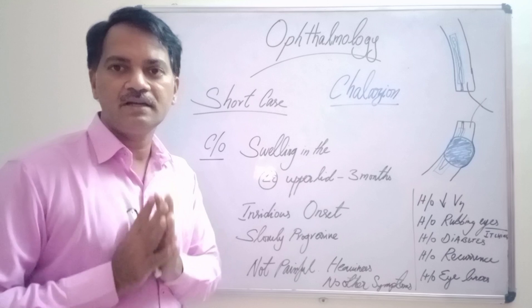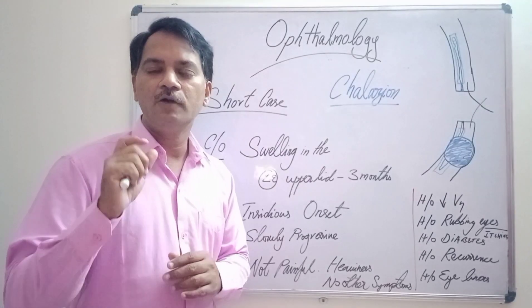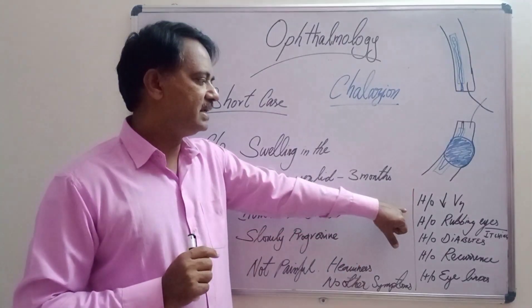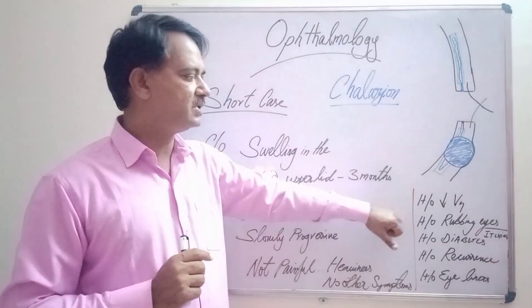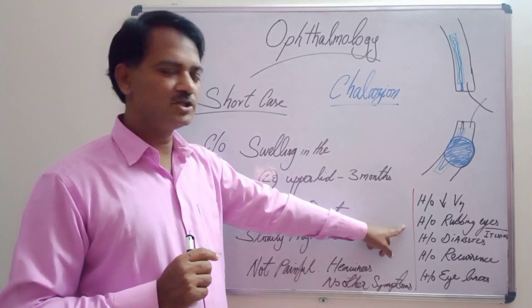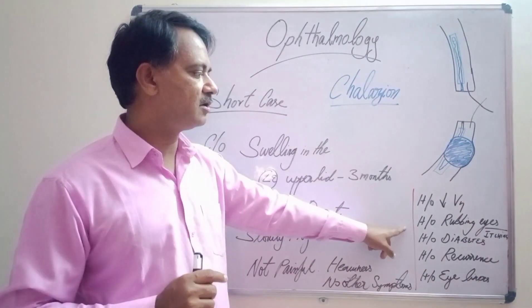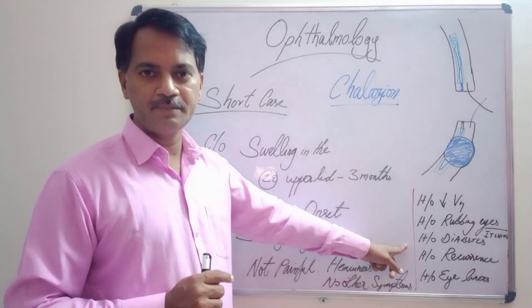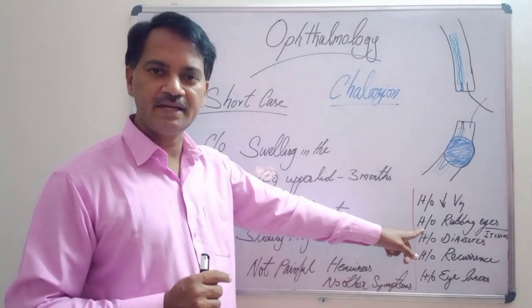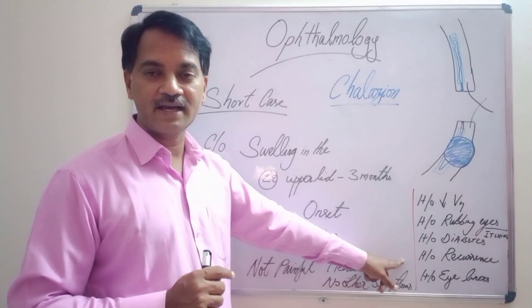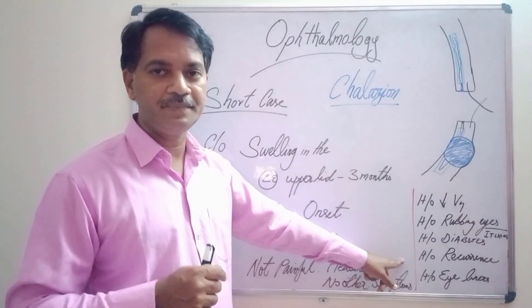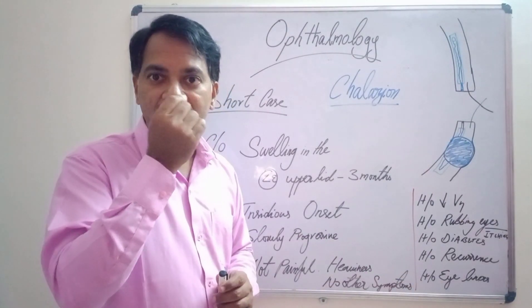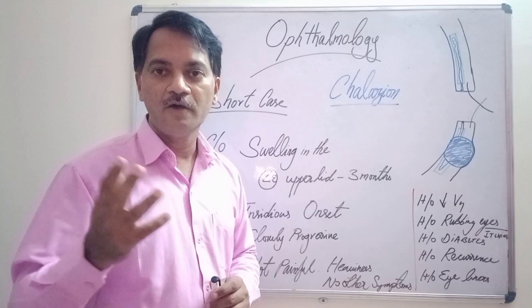Whenever such a patient comes to us, we have to ask the following history: whether there is any history of defective vision, whether there is a history of frequent rubbing, swelling, or itching of the eyes, whether there is a history of diabetes mellitus for which he is getting treatment, whether there is a history of recurrence, repeated such swellings appearing, or whether there is a use of eyeliners in case of females.